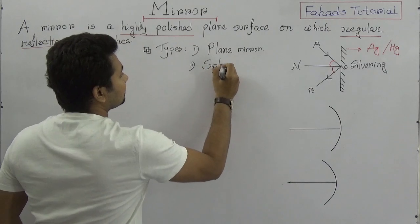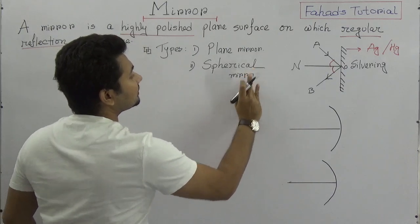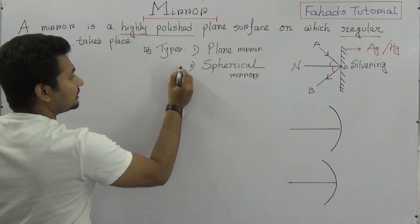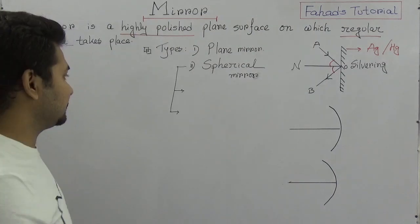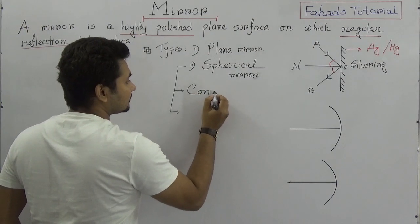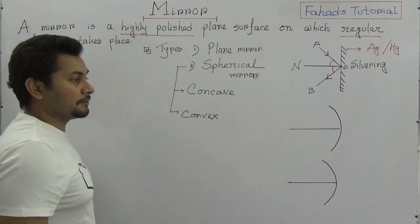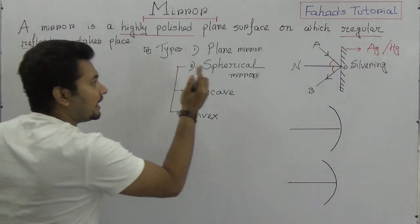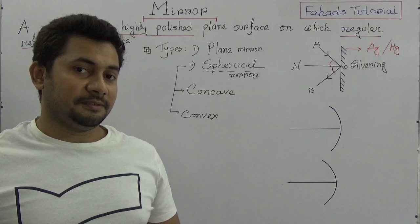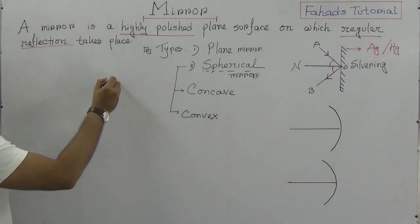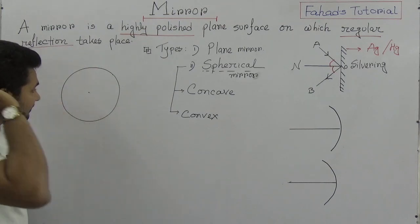The spherical mirror can be two types: concave and convex. Why? Because this mirror is a part of a sphere. Think about a spherical shape — this is a spherical part, and this is the center of the sphere.